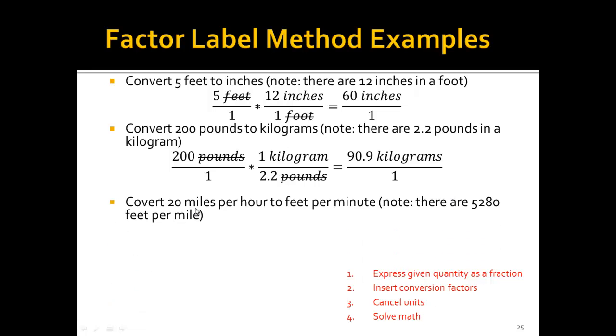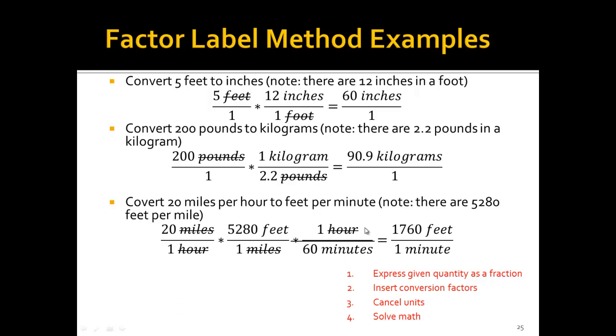Let's try one more. So this one's a little bit more complicated. Now this is 20 miles per hour to feet per minute. They're 5,280 feet per mile. So we start with 20 miles per one hour, and then we're trying to cancel out, get rid of the miles, and end up with feet. So we write 5,280 feet per one mile. And then we're trying to get rid of the hour and go to minutes, and we know there's one hour in 60 minutes. And so then we do the math. We do 20 times 5,280 divided by 60, and that gives us 1,760 feet per one minute.